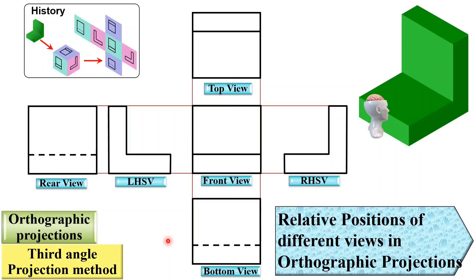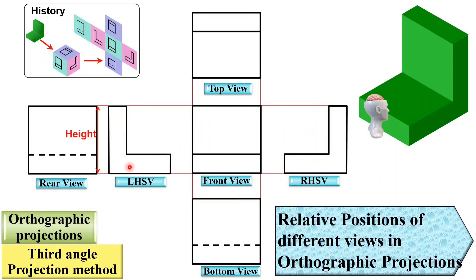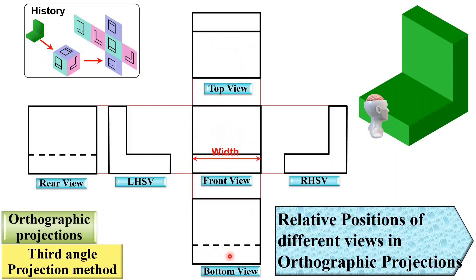Now, very important features of orthographic projection. Height is common in the front view, right hand side view, left hand side view, and rear view — this height is the actual height of the object. Width is common in the top view, front view, and bottom view — this width must be the same in these three views. Similarly, height must be the same in those four views.